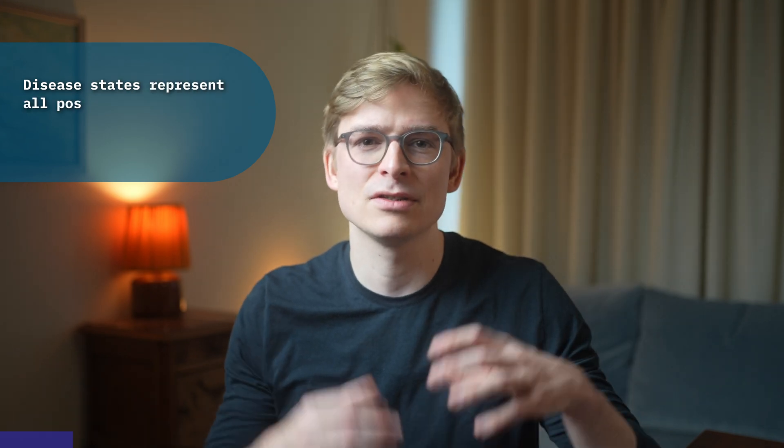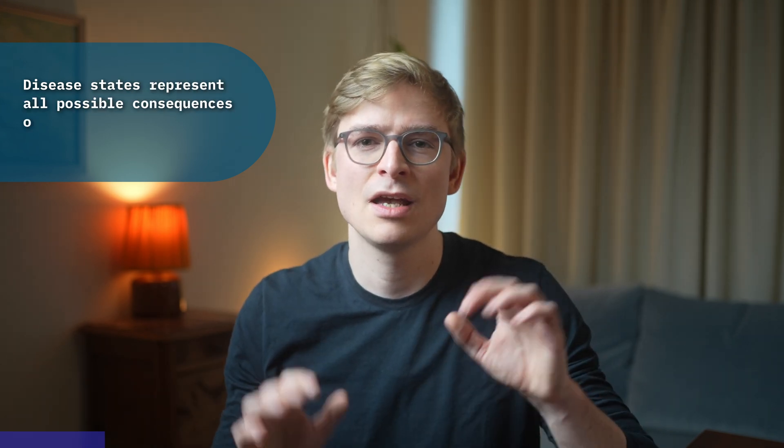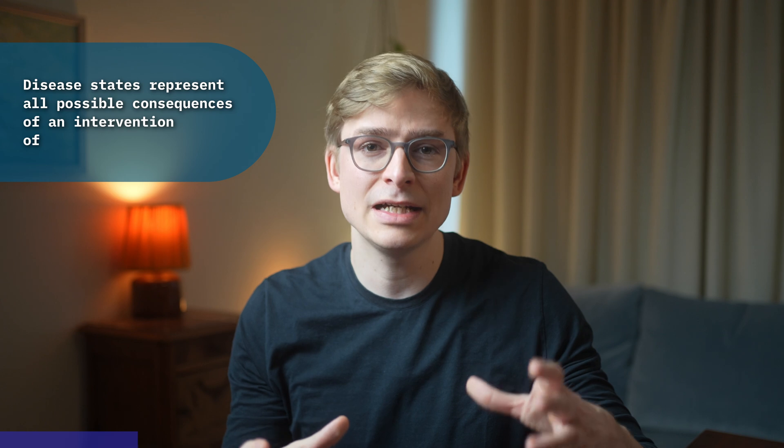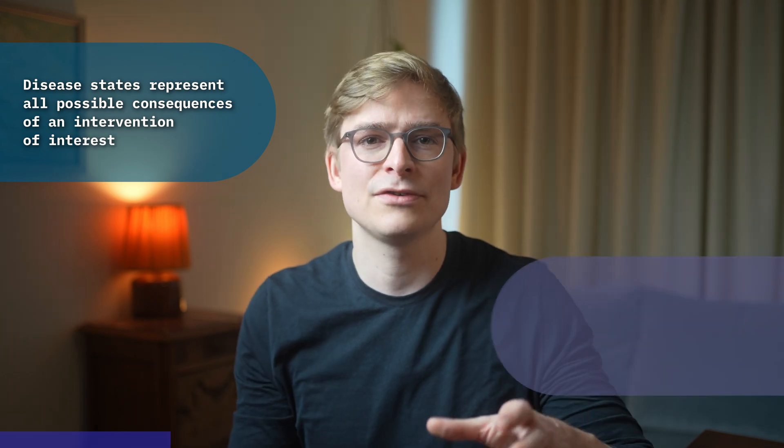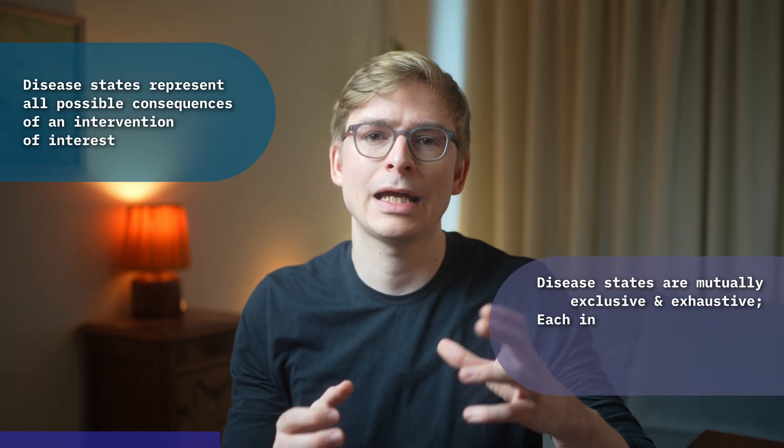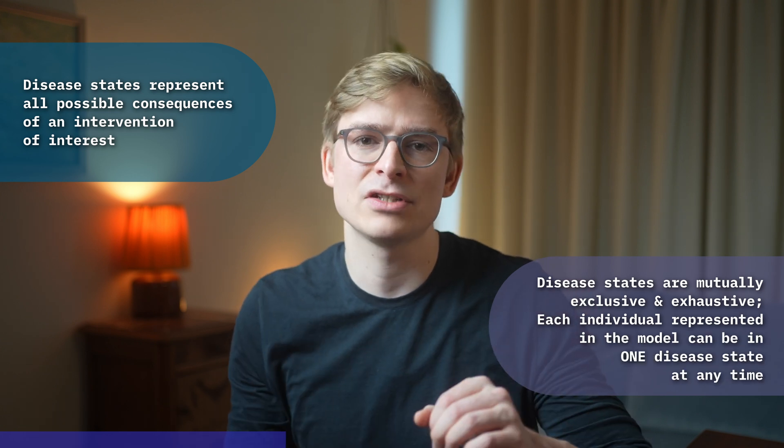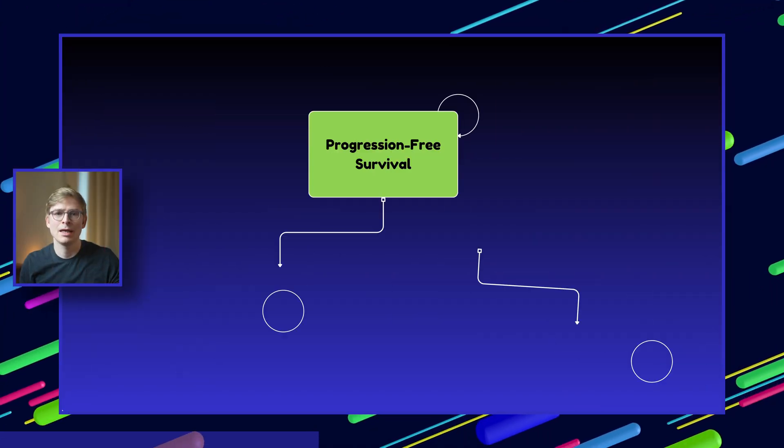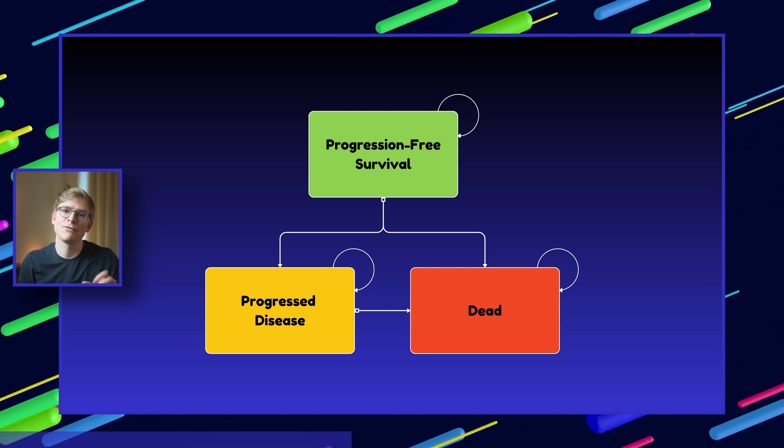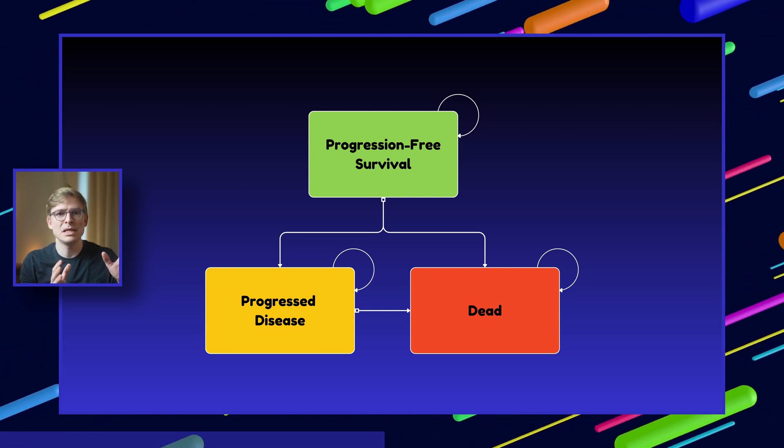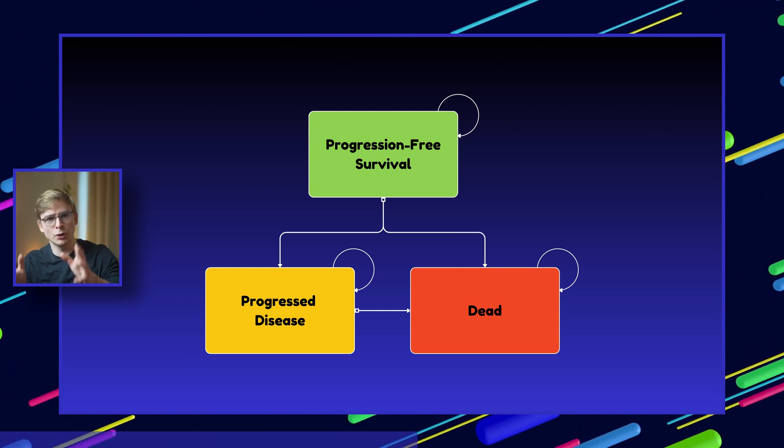Markov models use disease states to represent all possible consequences of an intervention of interest. These disease states are mutually exclusive and exhaustive, so each individual represented in the model can be in one and only one of these disease states at any given time. For example, imagine a cancer patient in one of three health states: they could either be progression-free, progressed, or dead.